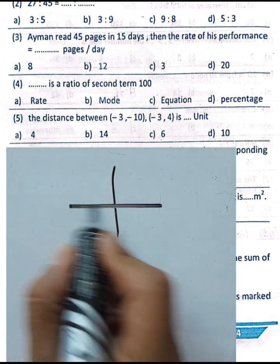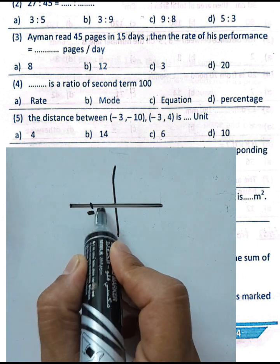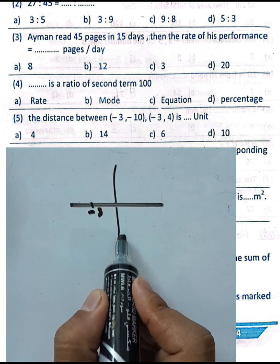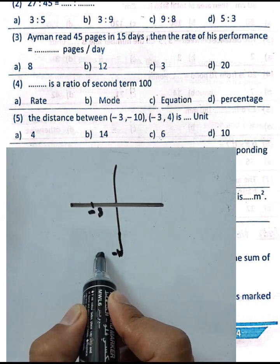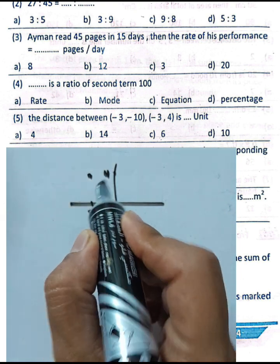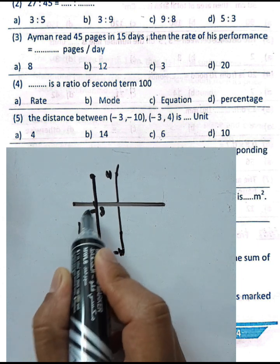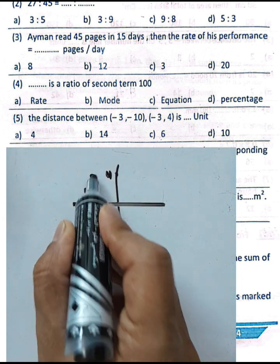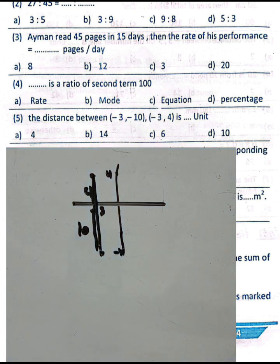You can also solve by plotting both points on a coordinate plane. First point is (−3, −10) and second point is (−3, 4). Count the units: 10 units below and 4 units above zero, so 4 plus 10 equals 14. The result is 14.